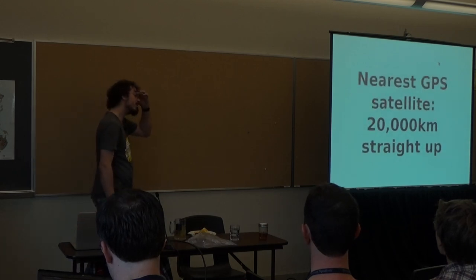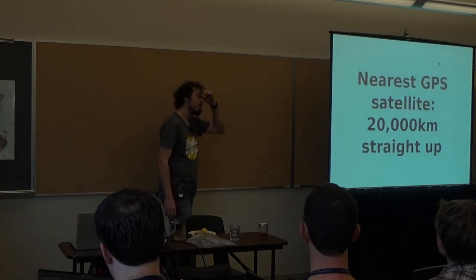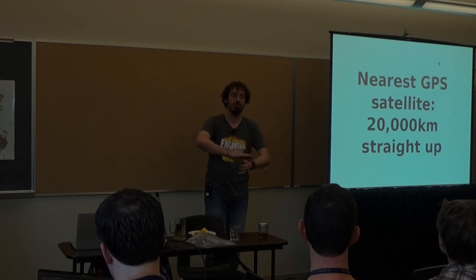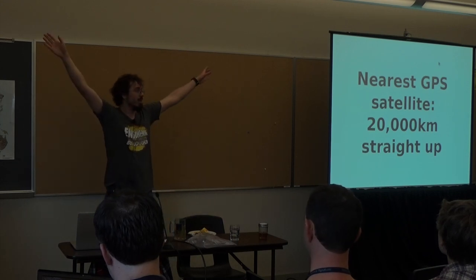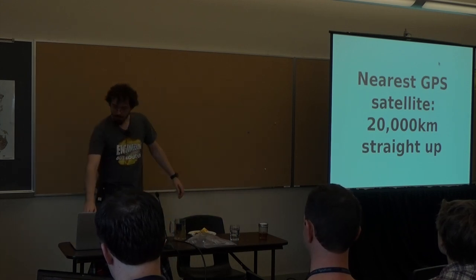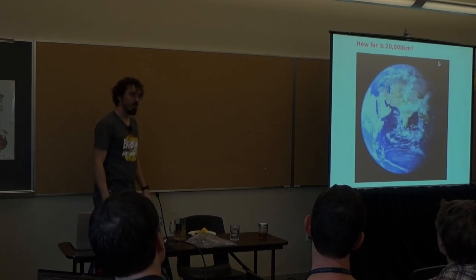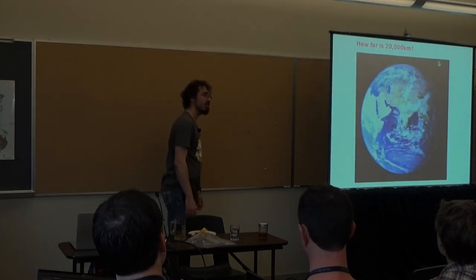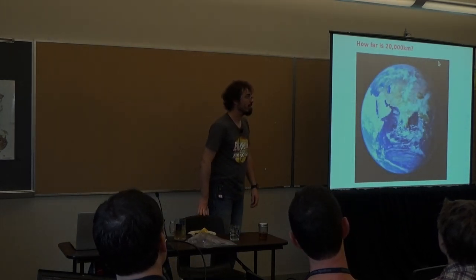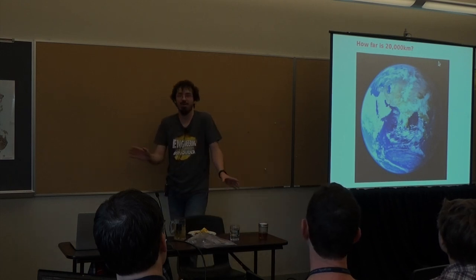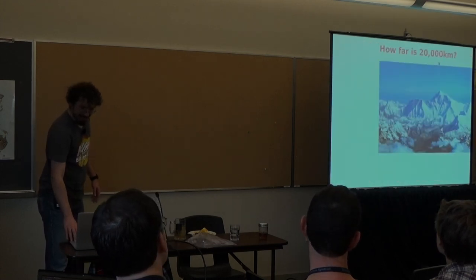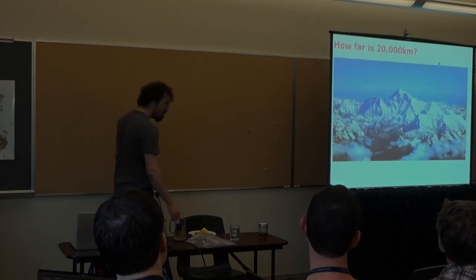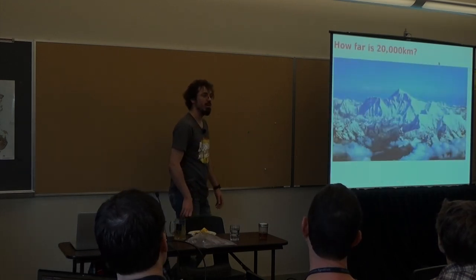So the nearest GPS satellite that you could possibly have at any given time, the nearest it could be, is 20,000 kilometers straight up. If it's not directly overhead, then it's even further away. So how far is 20,000 kilometers? Well, it is half the circumference of the Earth, for one thing. This is a really long ways, right? Half a world away, literally, right? It is also over 2,000 times the height of Mount Everest.